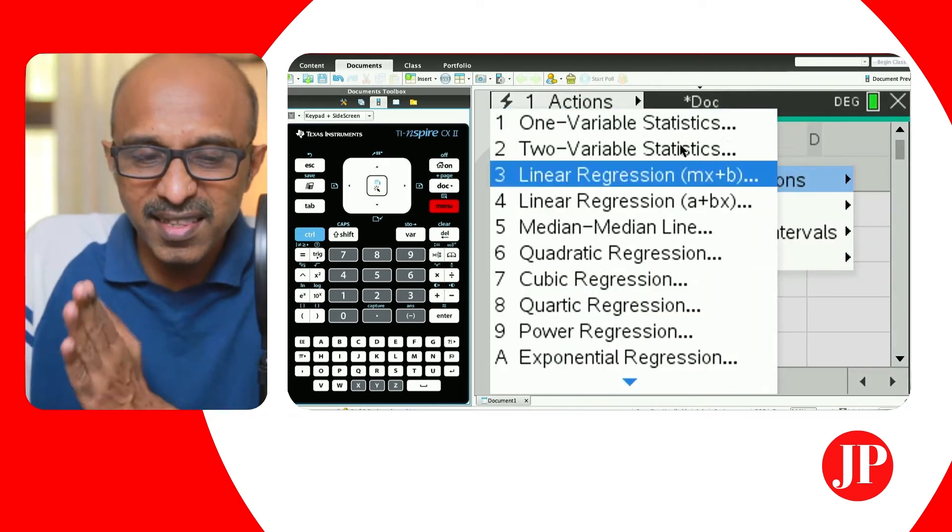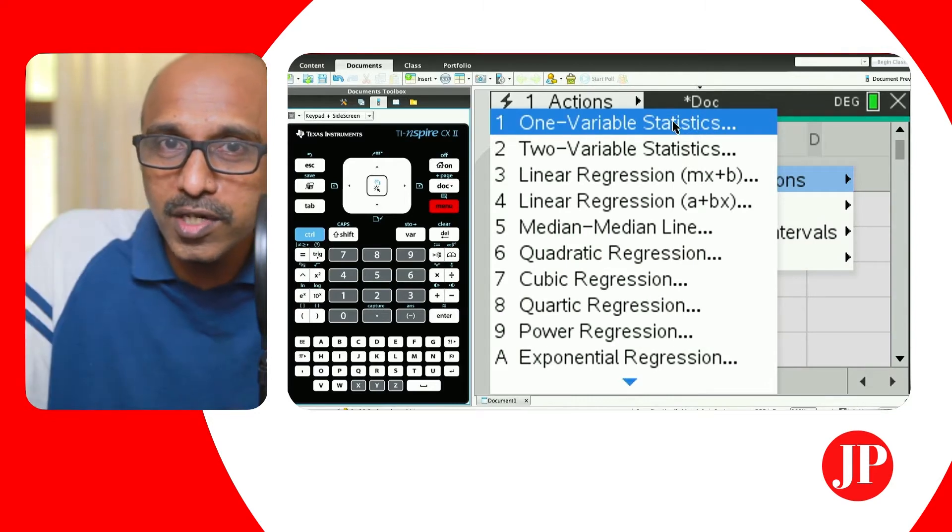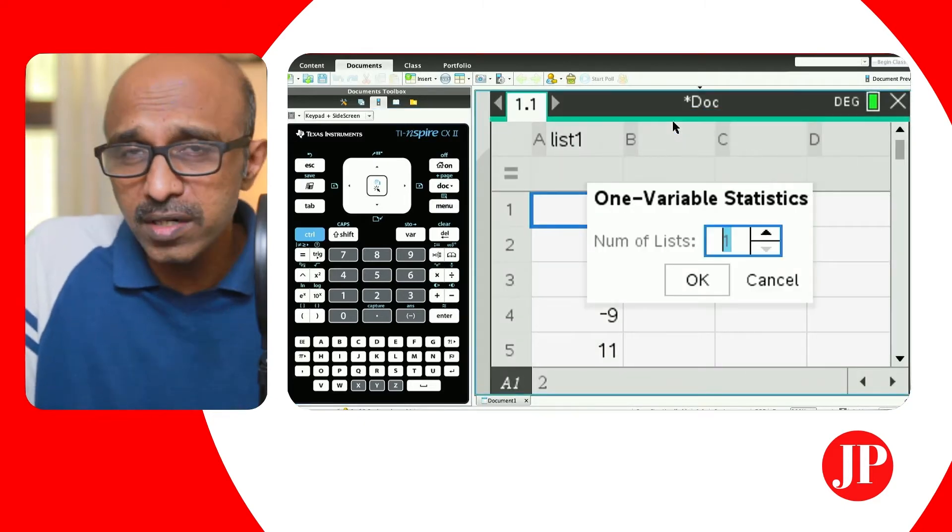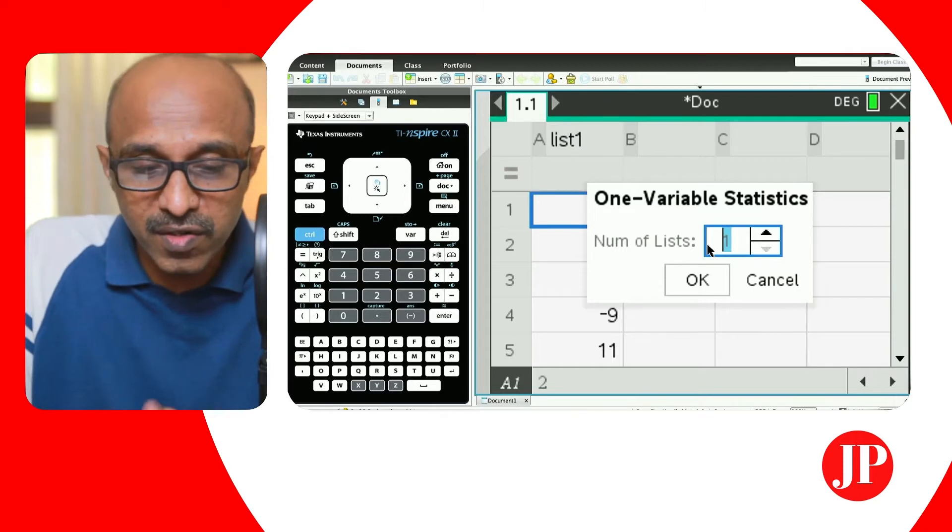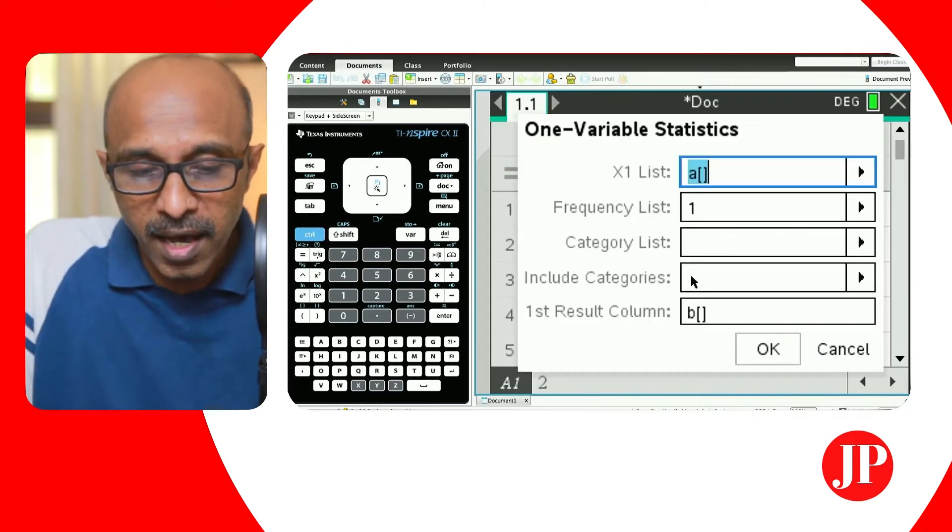And after that, you have to do F3. And you don't have to remember all that. You just go to the menu and you're doing statistics. You're doing stat calculations. And then in stat calculations, you're looking for one variable statistics. So all of those instructions are in words. You can just follow along. And that is what is meant by user-friendly.